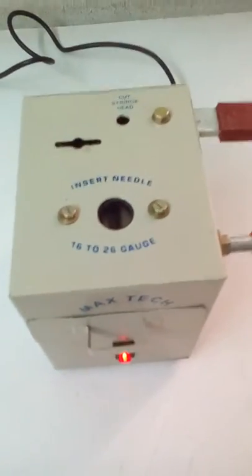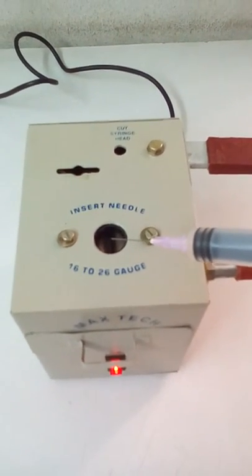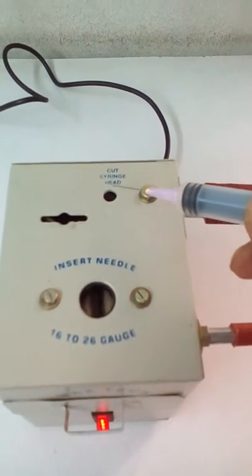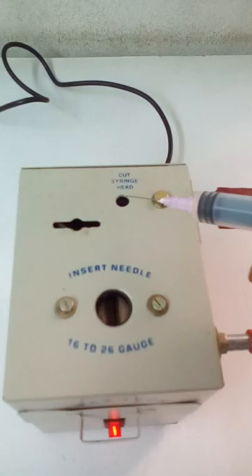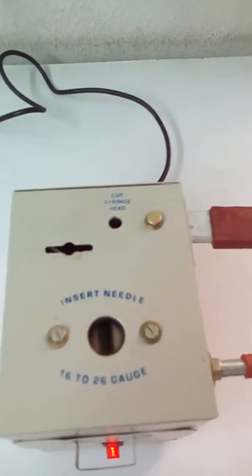This is an electric needle destroyer. Here are the electrodes where the needle will be burnt, and this hole is for destroying the syringe nozzle or syringe head. Now we show you a demo of how it works.